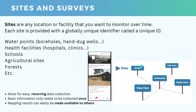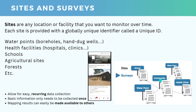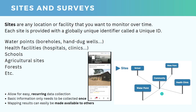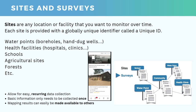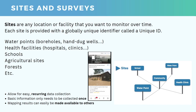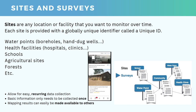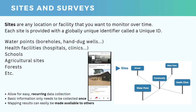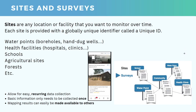Here we see an image of how you can link sites together and then keep continuing to collect survey information over time. So then you can ask the MWater database: show me this community or this water point — how has it worked over time, given that we've visited it many times? So that's a key difference between sites, which are these one-off locations, and surveys, which are free-form data collection forms that you can design yourself and connect to sites.